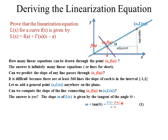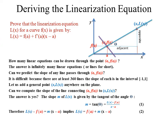We manipulate this equation by multiplying both sides by X minus A. On the right-hand side, X minus A cancels the denominator, leaving L of X minus F of A. On the left-hand side we get M multiplied by X minus A. Moving F of A to the right-hand side gives us L of X equals F of A plus M multiplied by X minus A.